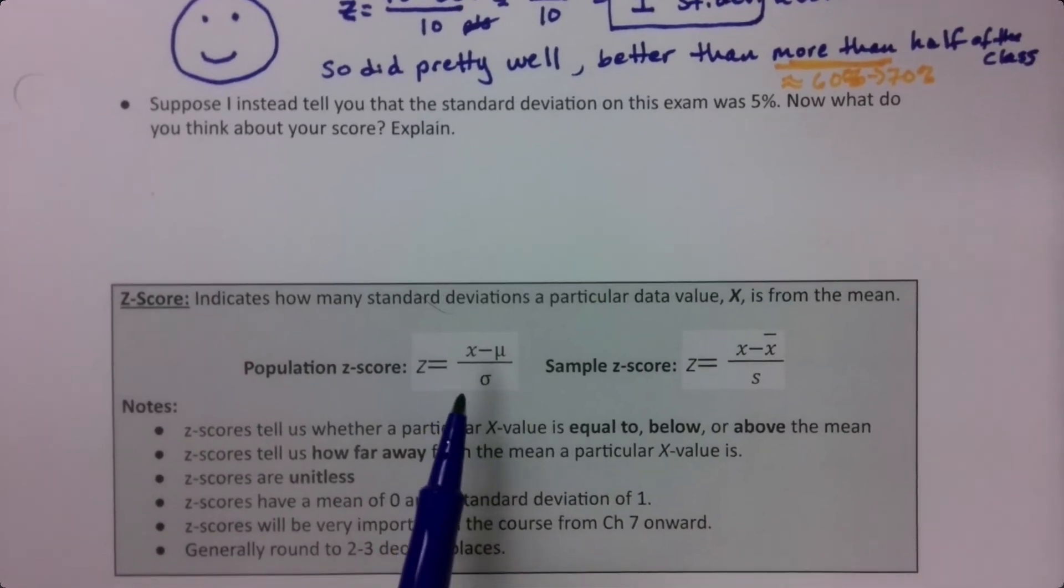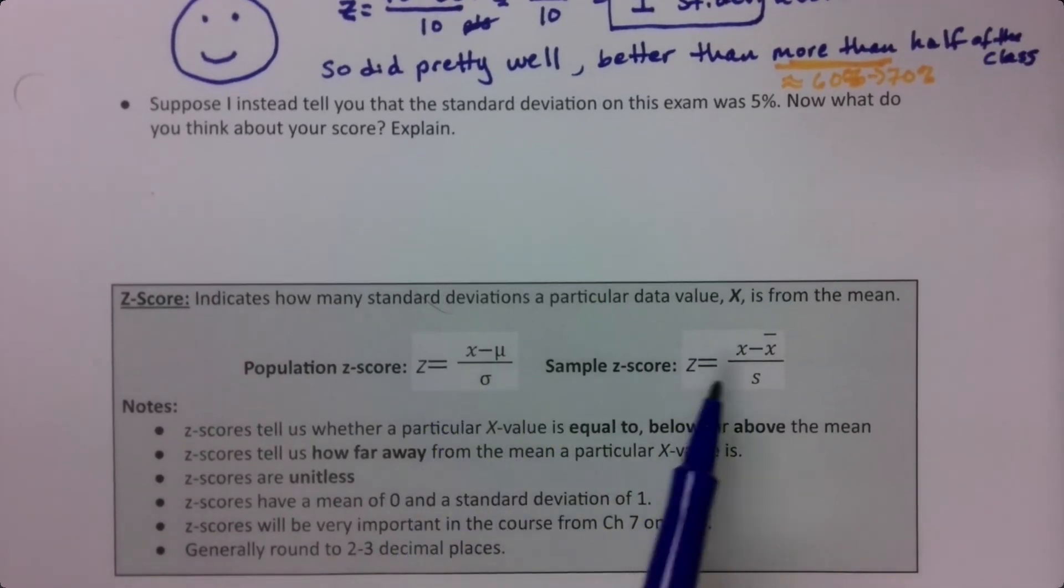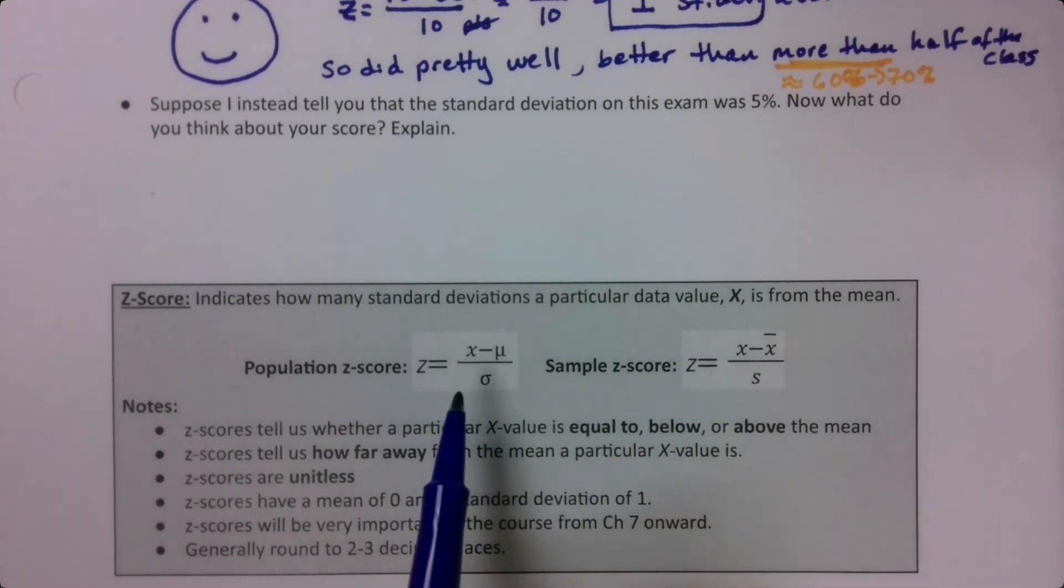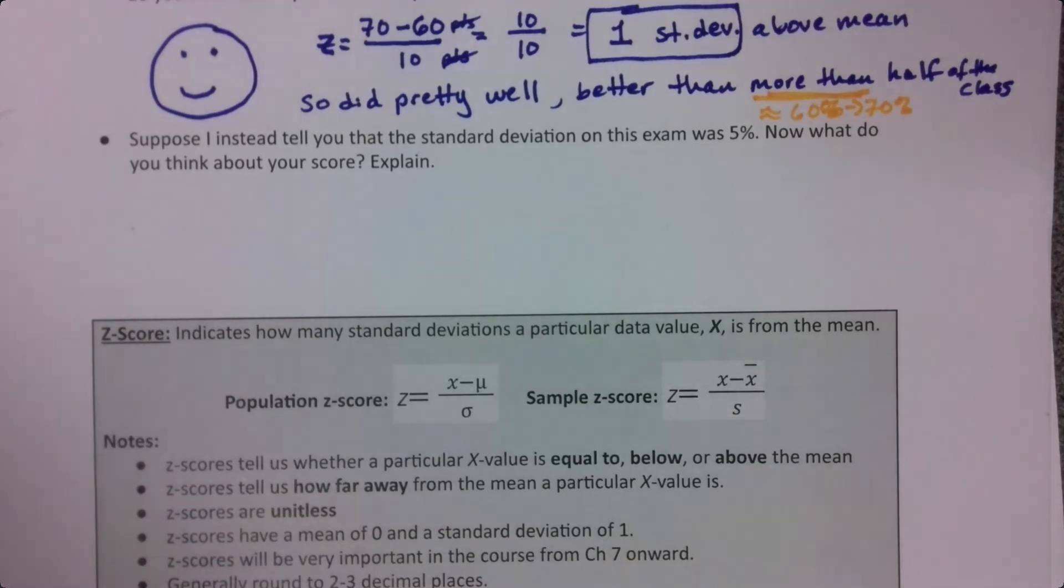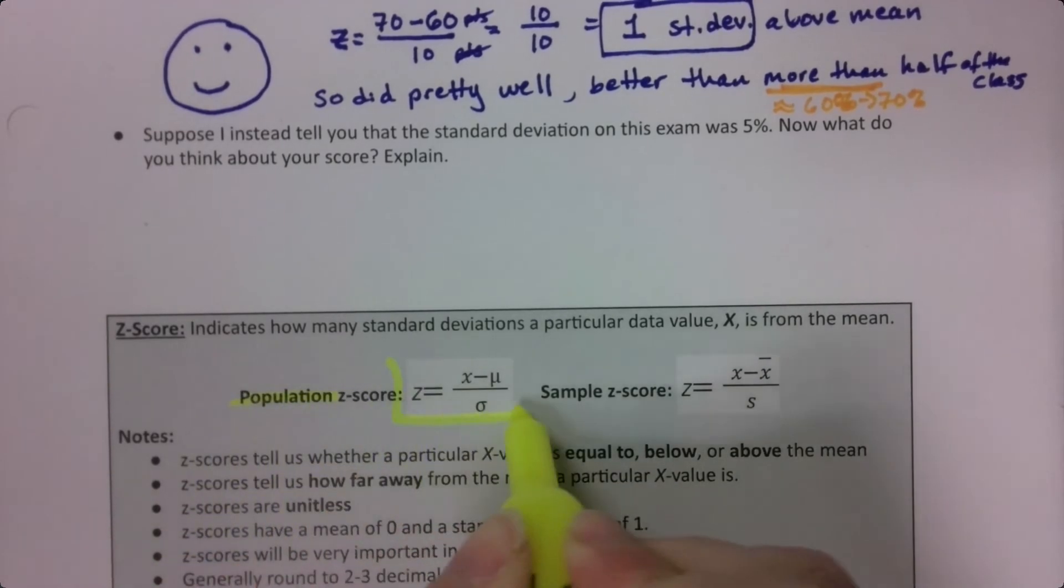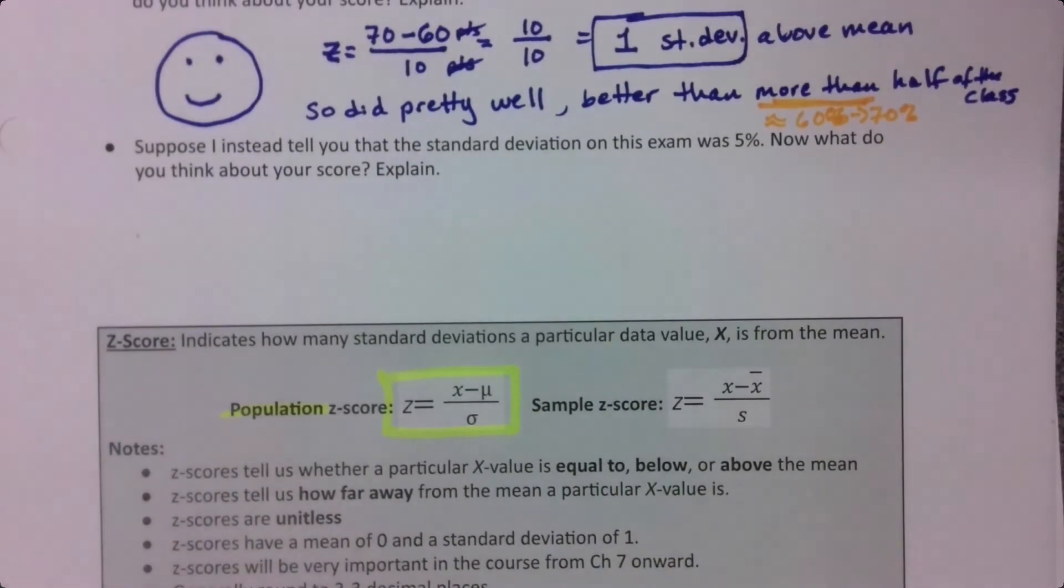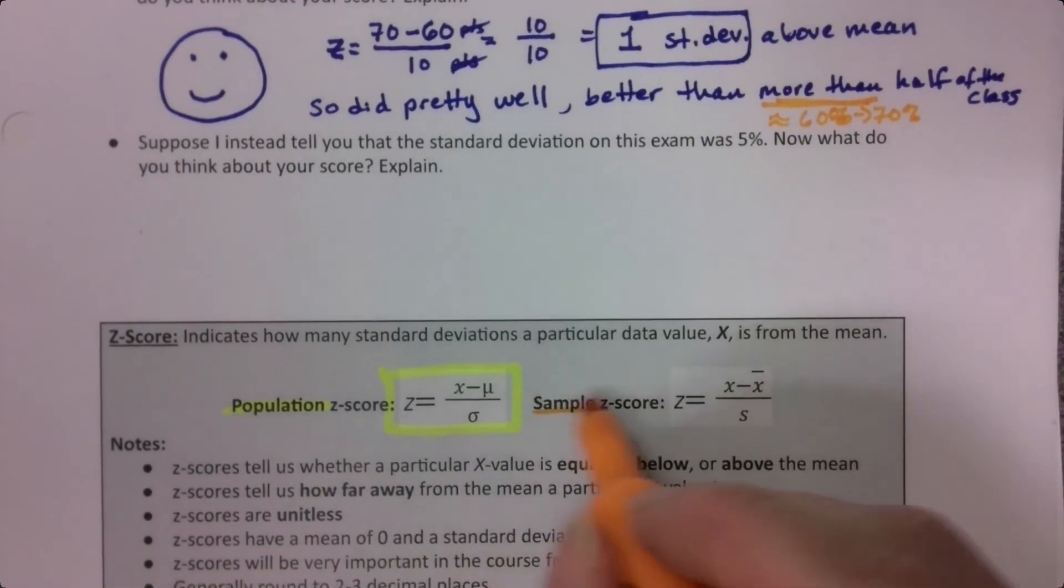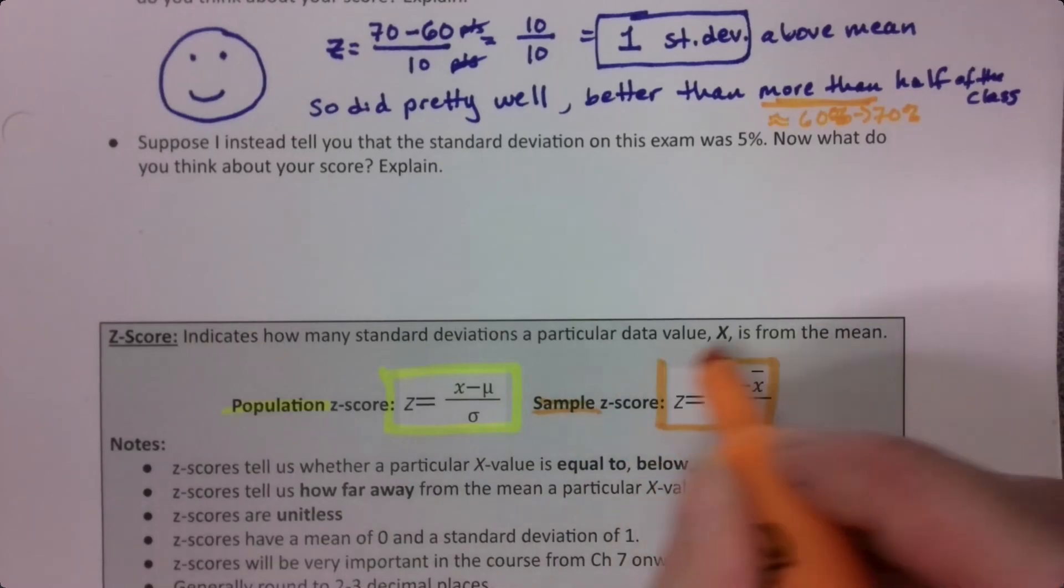And that's this for these formulas right down here. So the population z-score, the sample z-score. It doesn't really matter which one it is. It works the same way. It's just that if it's a population, use the formula on the left. And if it's a sample, you use the formula on the right. But it doesn't change how the formula functions. It functions as it does every time, which is take the value, subtract the mean, divide by the standard deviation.